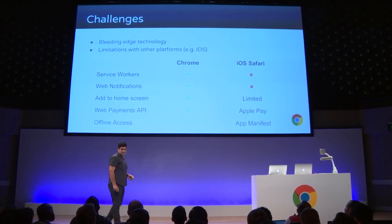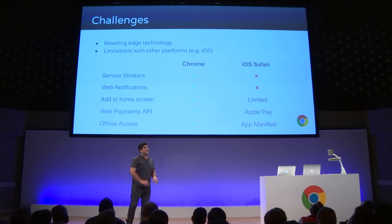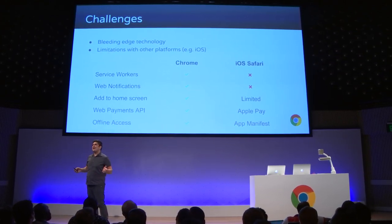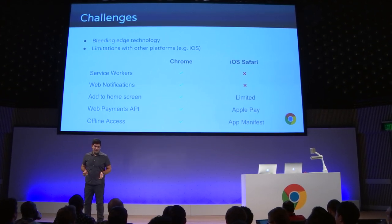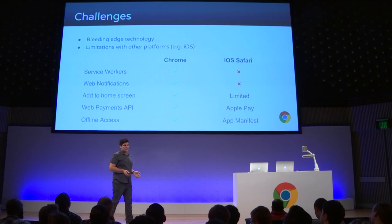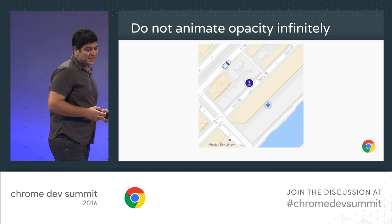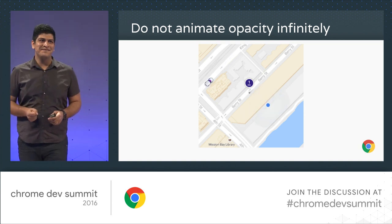We had challenges doing this work too. The biggest challenge was the other platform. At the same time, all these PWA APIs are pretty new, and sometimes we found MDN documents are out of date. There aren't many Stack Overflow questions to look for — we just ask questions and don't get answers. One little lesson we learned: if you use CSS animation for opacity infinitely, it's going to crash your browser. Don't do that.